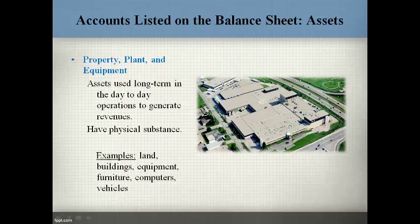Property, plant, and equipment consists of assets used in the day-to-day operations for more than one year to generate revenues. They have physical substance — you can touch and see them. The most common items included in property, plant, and equipment are land, buildings, equipment, furniture, computers, and vehicles.